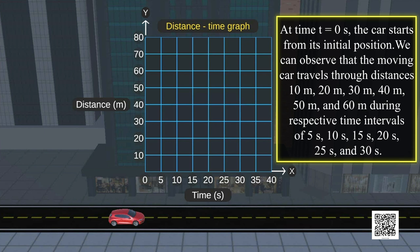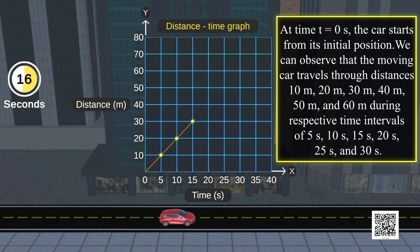We can observe that the moving car travels through distances 10 meters, 20 meters, 30 meters, 40 meters, 50 meters, and 60 meters during respective time intervals of 5 seconds,